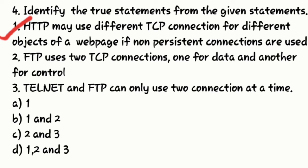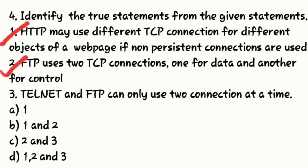If it was a persistent connection, then only one TCP connection is required. So option one is true. Option two: FTP uses two TCP connections, one for data and another for control — that is also true. FTP uses two TCP connections at the client and server side. If the client wants something, they use the control connection, and if they want to copy some data, they use the data connection.